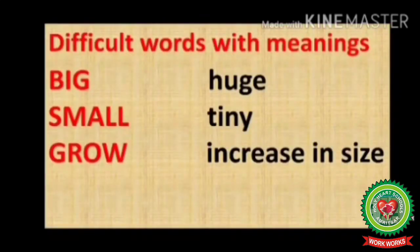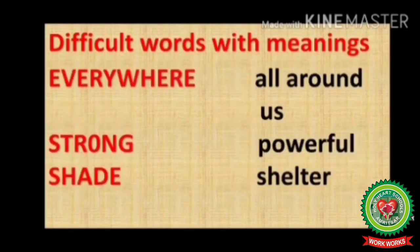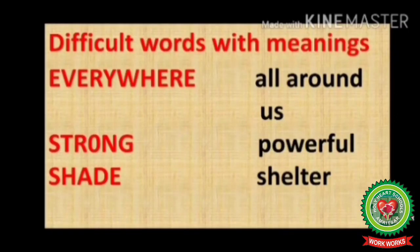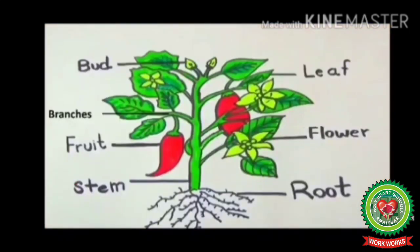Now let's go through the difficult words of this chapter. Big — B-I-G — big means huge. Small — S-M-A-L-L — small means tiny. Grow — G-R-O-W — grow means increase in size. Every — E-V-E-R-Y — everywhere — W-H-E-R-E — everywhere means all around us. Strong — S-T-R-O-N-G — strong means powerful.